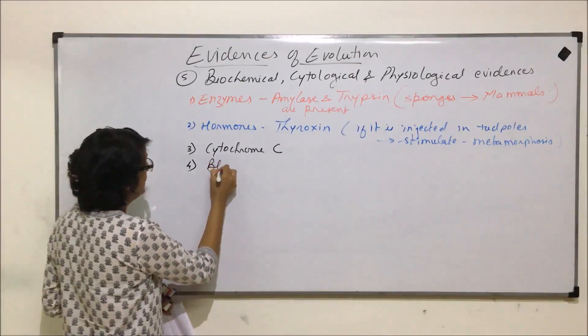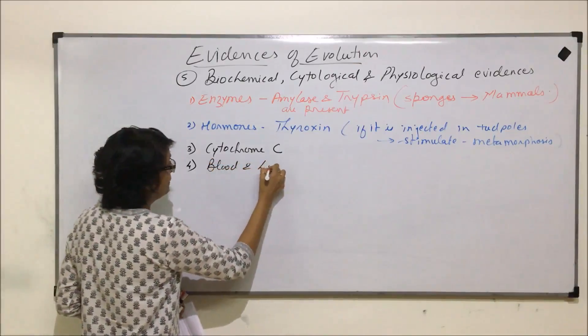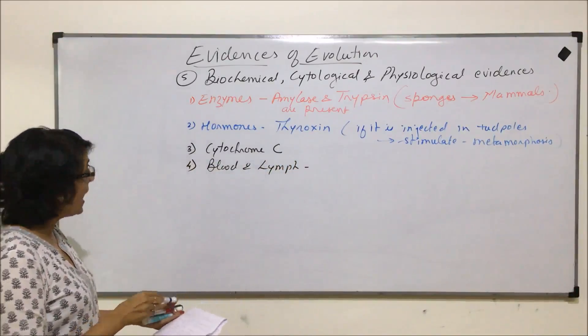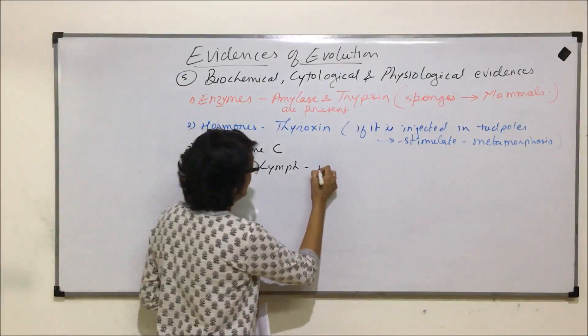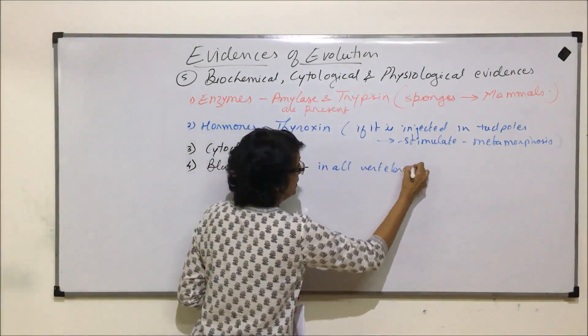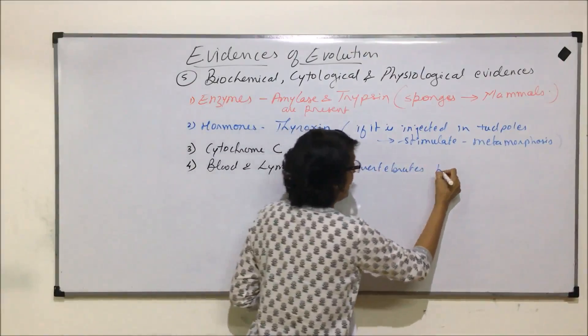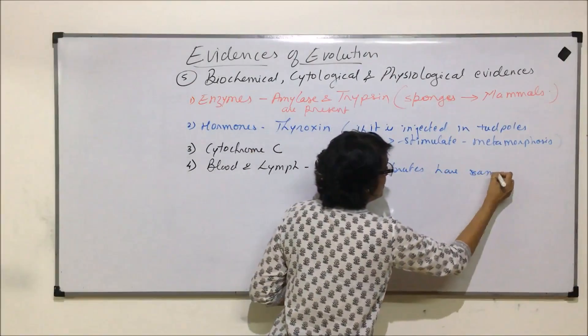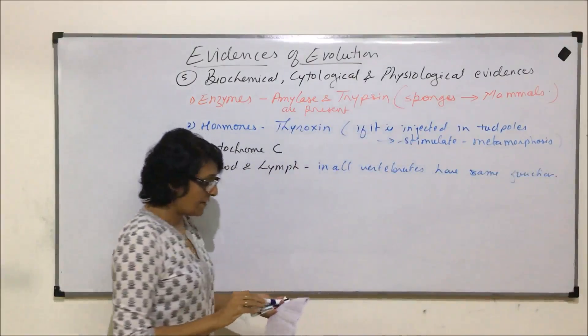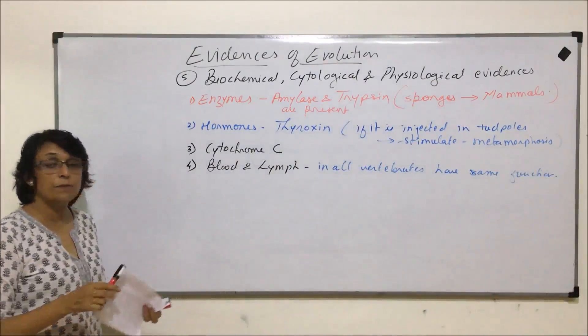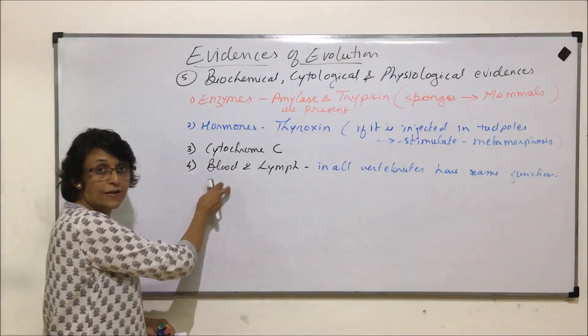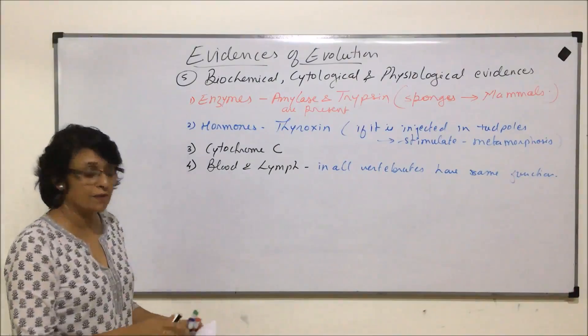Next category is of blood and lymph. Blood and lymph in all vertebrates have the same function. That means again, when we are talking of different organisms in different groups, they are performing similar kinds of functions - that is certain tissues, biochemical substances.